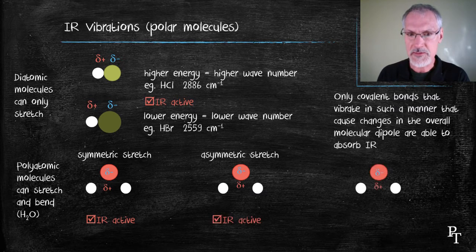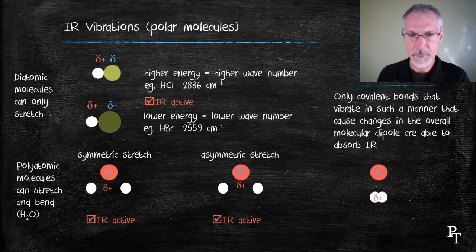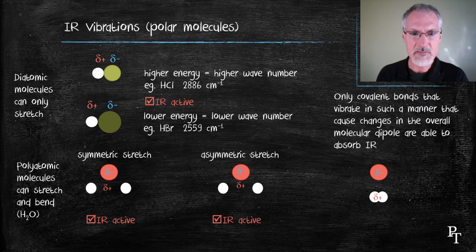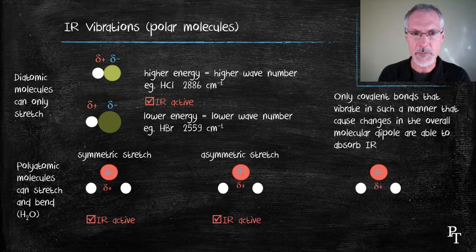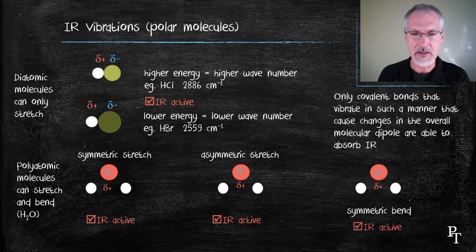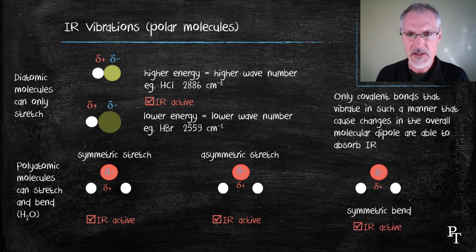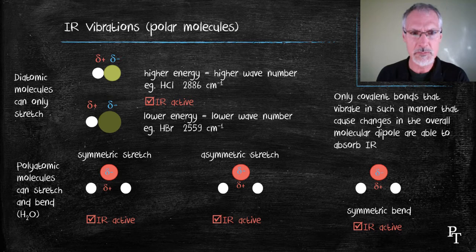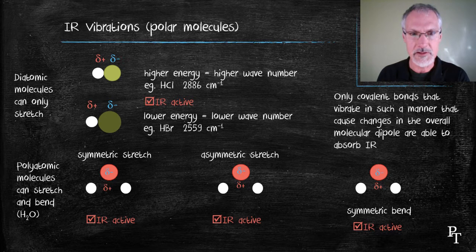Now I'm going to have those hydrogens bend in and out. And again we have a movement of the poles and such a vibration would absorb infrared radiation and be infrared detectable. So we can see here in all these cases with polar molecules, we tend to get vibrations or bending that are detectable and can absorb infrared radiation.